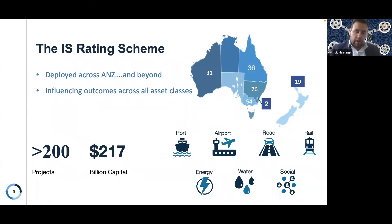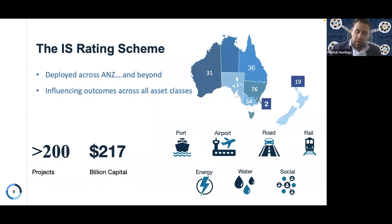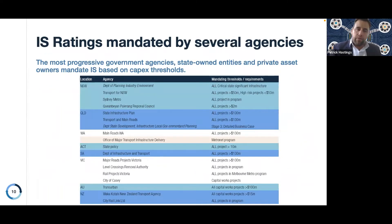We have $217 billion worth of assets currently under rating, equating to over 300 ratings and over 200 projects. A project of high scale value might have a multitude of ratings underneath it.